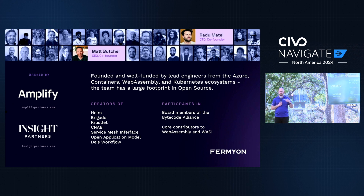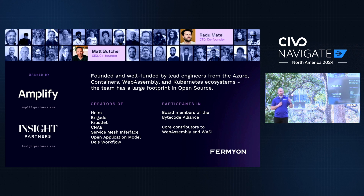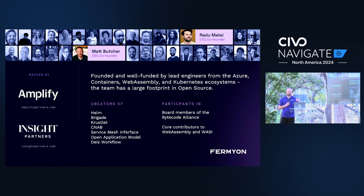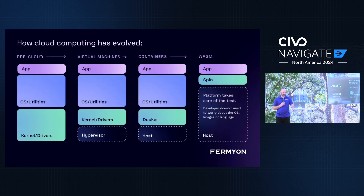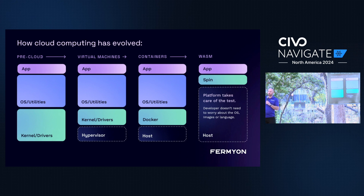Looking around at different technologies, we saw WebAssembly — this thing built for the front end — and realized it had all these features: a sandbox, super small size, support for a bunch of languages. It wasn't intended for this use case, but maybe we could build a company to make it do that. We left Microsoft, created the Bytecode Alliance with Microsoft, Amazon, Fastly, and others, and Fermyon was born around taking WebAssembly and running it on the back end.